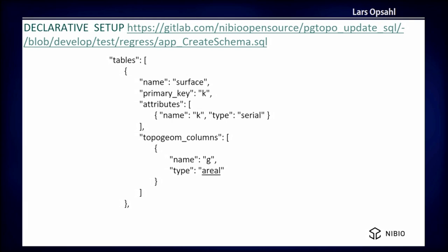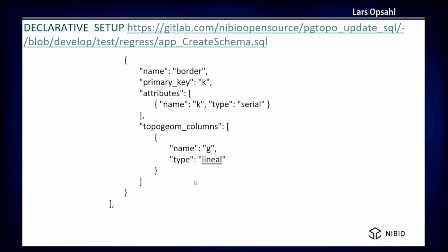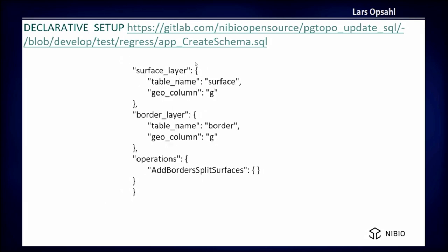This is the first time I see these slides, so bear with me. I think this is the declarative way we are creating the database — a JSON format to avoid writing raw SQL to create the schema. We define it in JSON format, specifying which tables exist, and then we assign two roles: the surface layer and the border layer. This code is supported by an open source project from Nibbio, hosted on GitLab under the Nibbio open source namespace. It's a set of PL/pgSQL and SQL functions, and one of these functions accepts this format to create a schema and expose functions to interact with it.